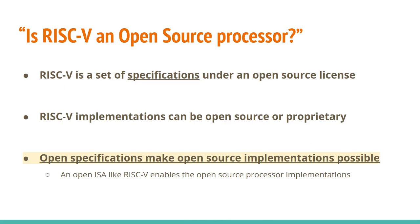Sometimes I get the question: is RISC-V an open source processor? RISC-V itself is just a set of specifications under an open source license, and RISC-V implementations can be either open source or proprietary. But open specifications make open source implementations possible — an open ISA like RISC-V enables open source processor implementations, which is something I'm really excited about.